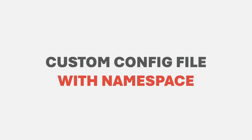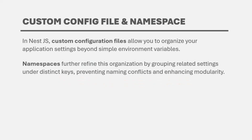In the last lecture we learned about custom configuration files and we also created a custom configuration file called app.config. It turns out that we can divide a custom configuration file into multiple custom configuration files, and we can do that with the help of namespaces. In a NestJS application, custom configuration files allow us to organize our application settings beyond simple environment variables, and namespaces further refine this organization by grouping related settings under distinct keys, preventing naming conflicts and enhancing modularity.